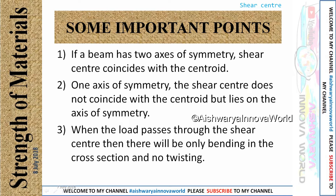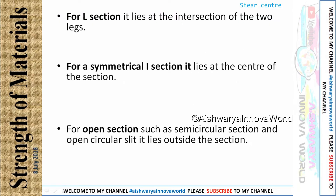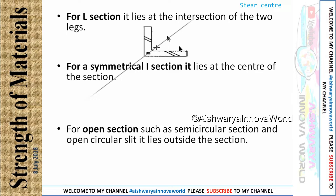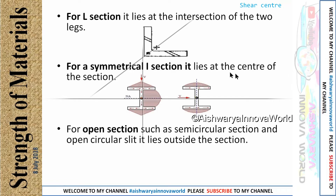When a load passes through the shear center, there will be only bending in the cross-section and no twisting, as stated in the definition. For an L-section, both legs intersect at a point. The line of symmetry cuts the L so both sides form a mirror image — the shear center lies on that line of symmetry.